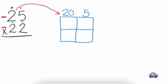Now we're going to move to expanding 22. We expand each of the digits and put them on the side. So we expand the first 2, which is going to be 20, then we expand the second 2 in 22, which is going to be 2. Here we see it's on the side.